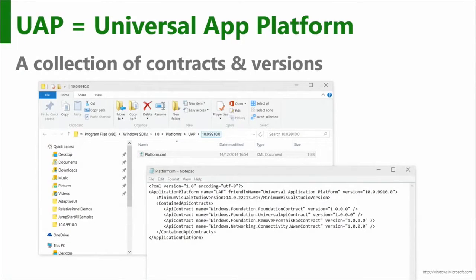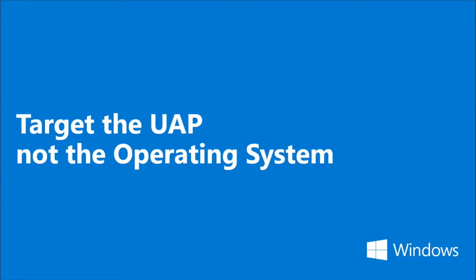When you look at the file structure, you can go into Program Files and the Windows SDK, go into the UAP — in this case version 9910 — open it up in Notepad, and you can see what makes up the platform. This is UAP 10; we're in preview right now, so the version number may change. Version 10.0.910 includes four contracts: Foundation and Universal among them. So now if I'm writing an application, I write to these contracts and these are the guarantees I get. I'm targeting the UAP, not the operating system — as long as UAP is there, systems are in place to make it available.